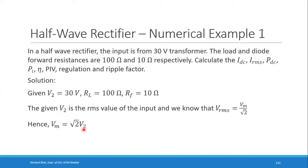V2 is given as 30 volts, so Vm = √2 × 30 = 42.426 volts. This is the peak value of the input voltage.